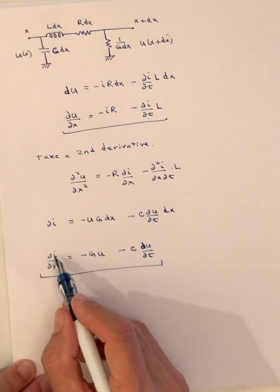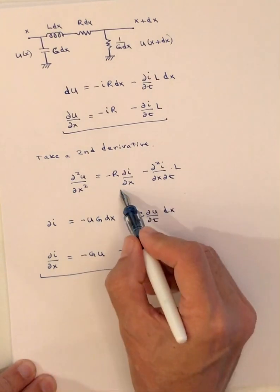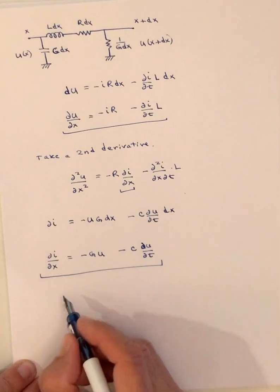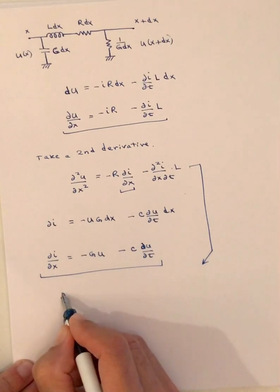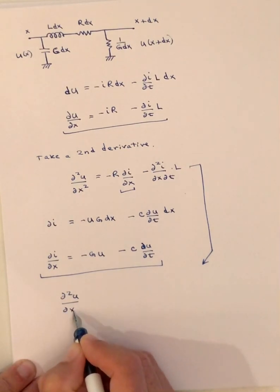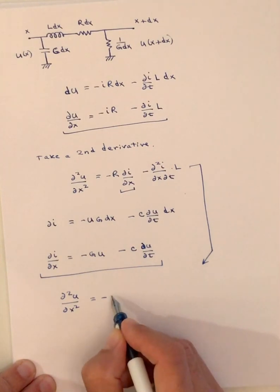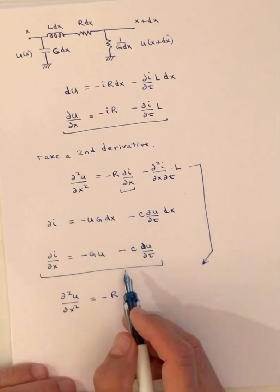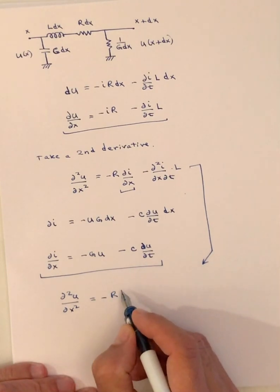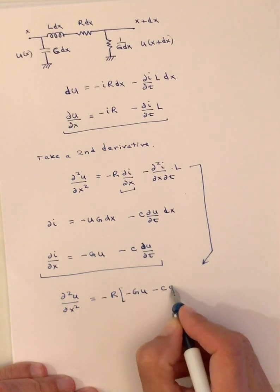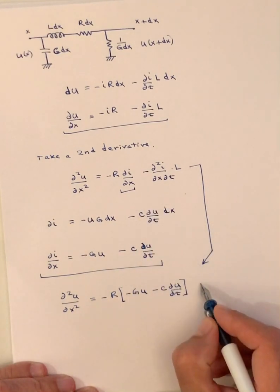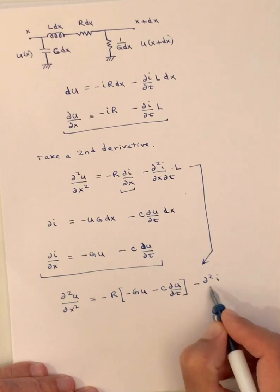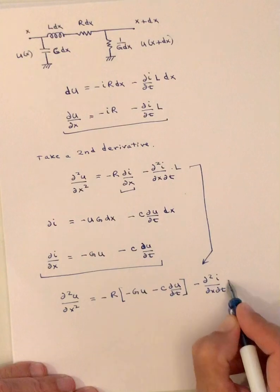Now we have an expression for DI/DX, which we can plug into our second derivative equation. The equation then becomes: D²U/DX² equals minus R times DI/DX, which substitutes to give us minus R times (minus G·U minus C·DU/Dt), plus the additional cross term: minus L·(D²I/DX·Dt).